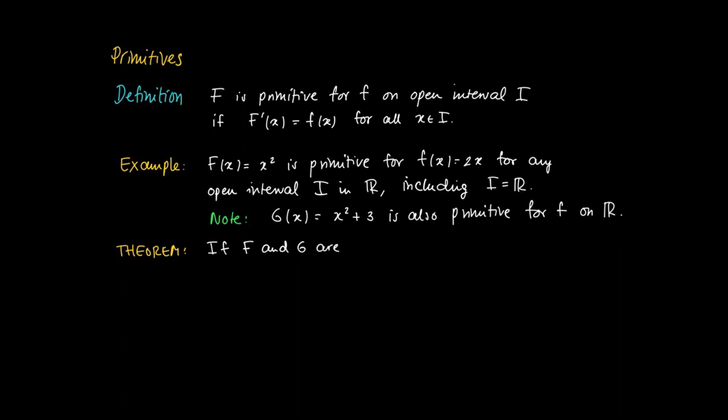Well this holds more in general. So if we have two functions capital F and capital G which are both primitives for some function f on I, then I can show that these functions differ by a constant. So I can express capital F as G(x) + c for some constant c in ℝ, and this constant is fixed on the whole interval I.